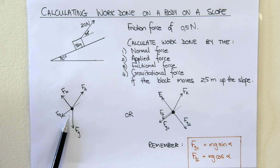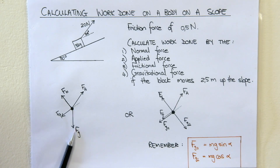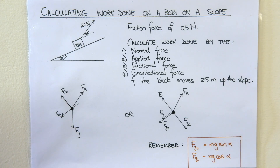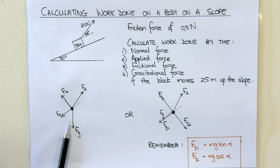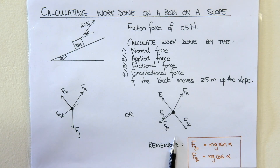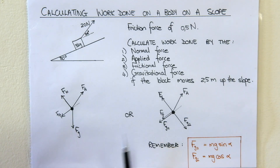I've drawn the free body diagram with the four forces acting on the three kilogram box. We have our gravitational force Fg, our frictional force is down the slope because the object is moving up the slope, the applied force, and the normal force. Please do not draw your normal force vertically upwards when an object is on a slope. The difference between the two free body diagram options is that the gravitational force has been resolved into its two components. Do not add Fg in if you are putting in Fg perpendicular to the slope and Fg parallel to the slope.